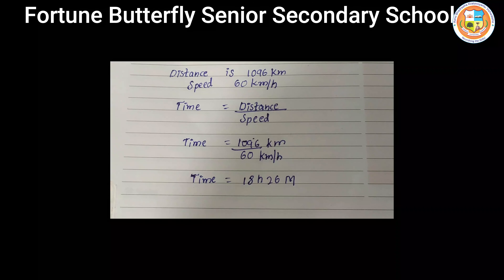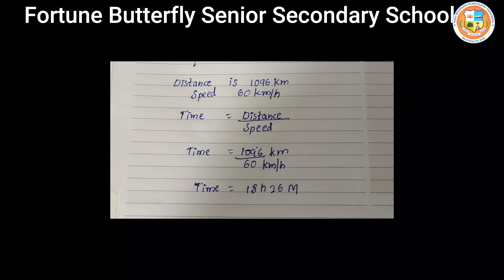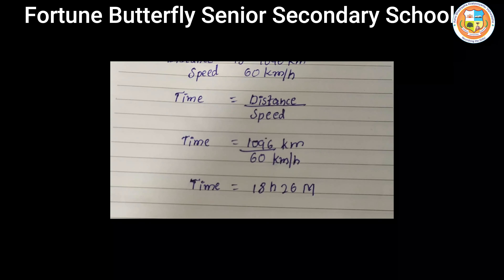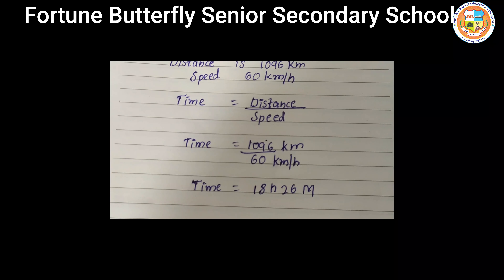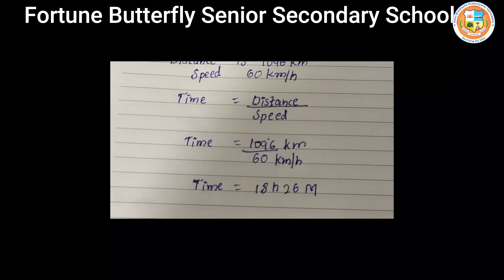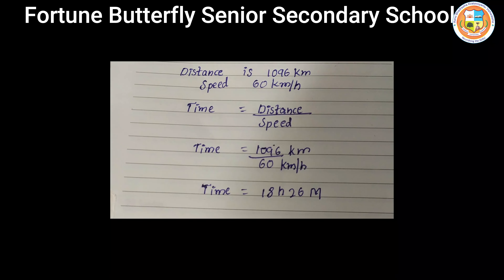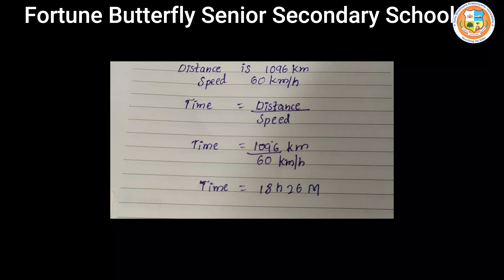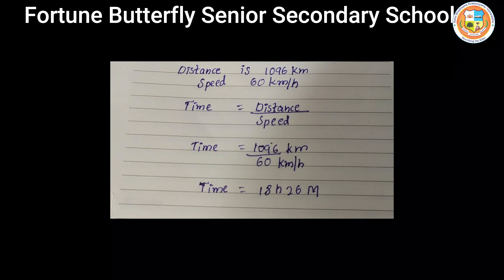The time formula is distance divided by speed. Time is equal to 1096 km divided by 60 km per hour. The total time taken by the car is 18 hours 26 minutes.